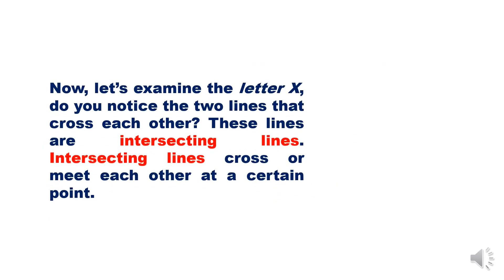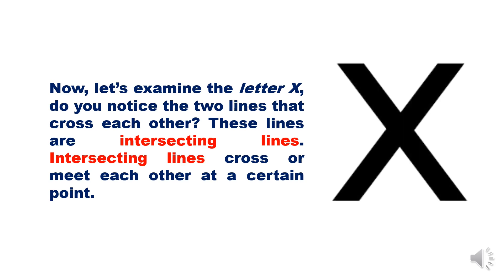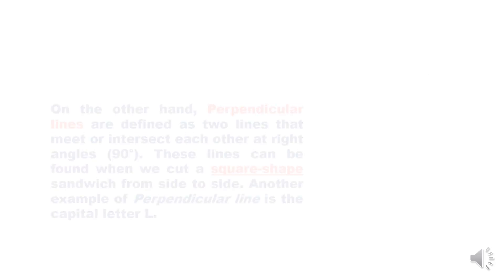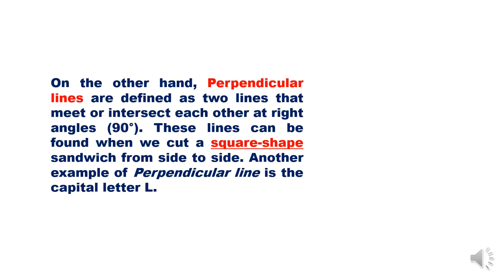Now, let's examine the letter X. Do you notice the two lines that cross each other? These lines are intersecting lines. Intersecting lines cross or meet each other at a certain point. On the other hand, perpendicular lines are defined as two lines that meet or intersect each other at right angles or 90 degrees. These lines can be found when we cut a square-shaped sandwich from side to side. Another example of a perpendicular line is the capital letter L.